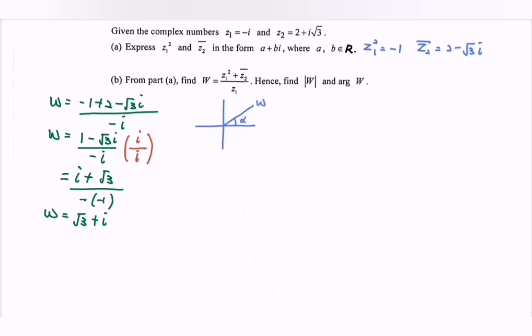Continue, next is to find the modulus of w. We have the formula: square root of square root of 3 bracket squared plus 1 squared. So here we have square root of 4, which equals the modulus of w equals 2 units.